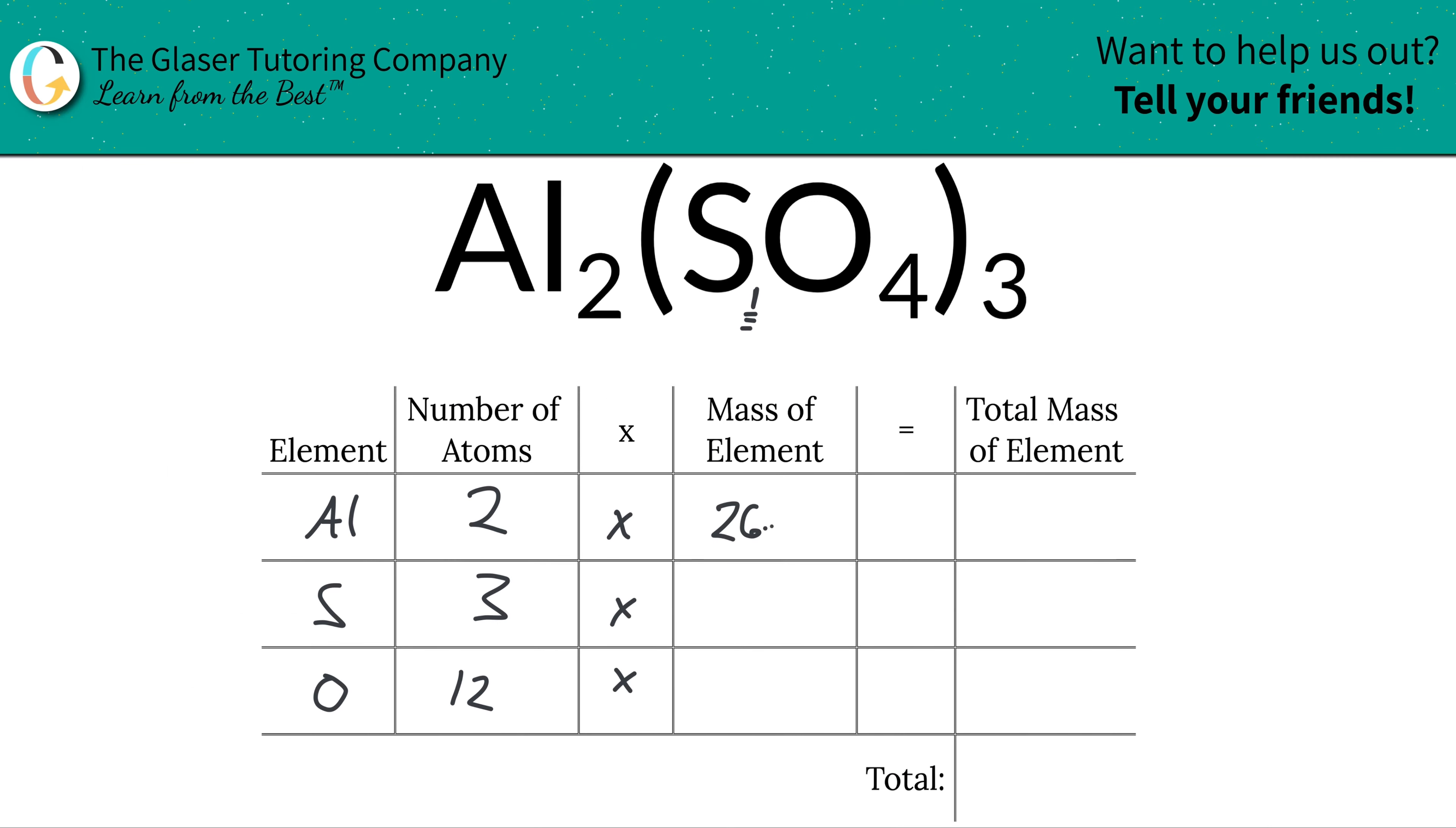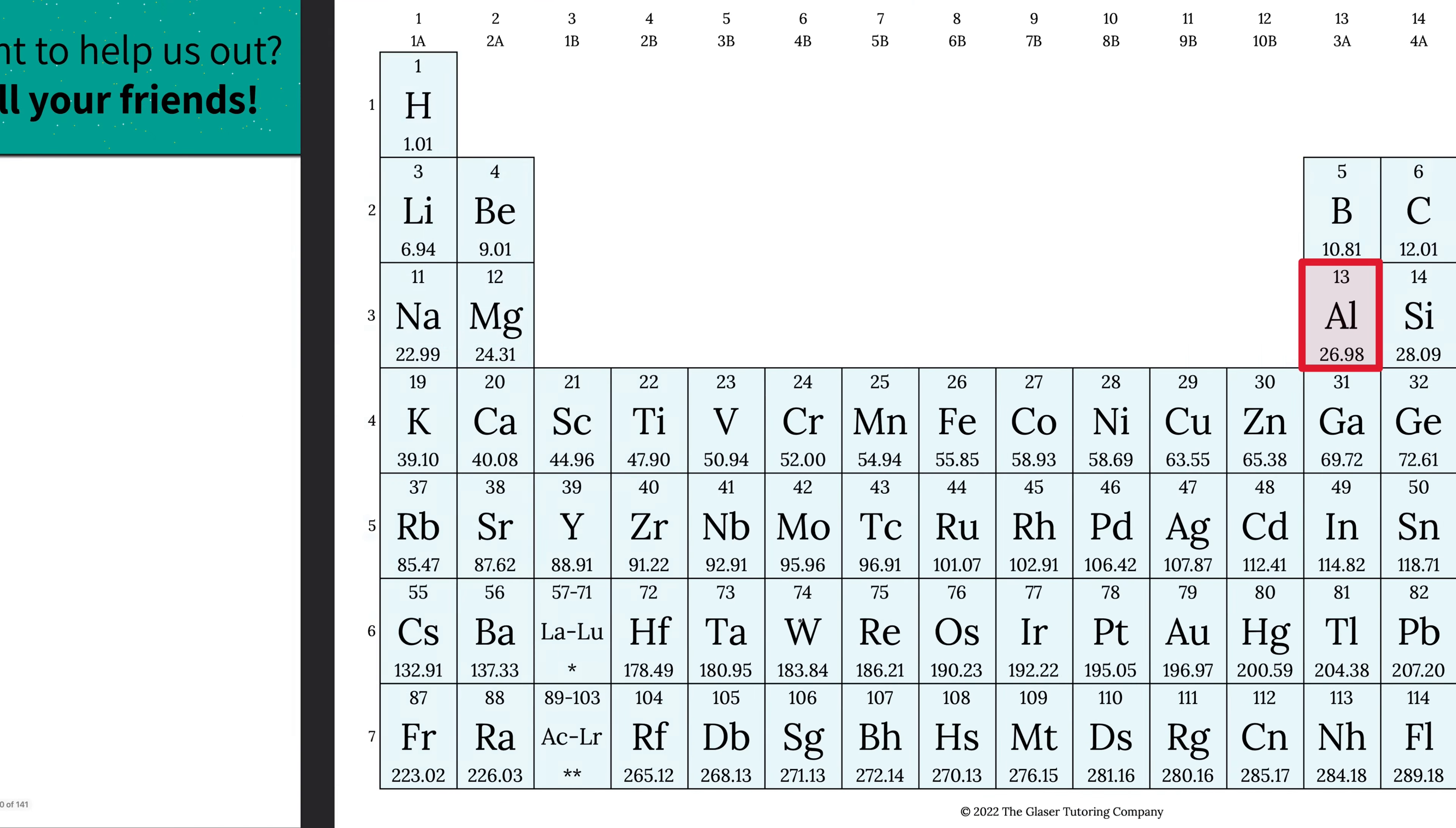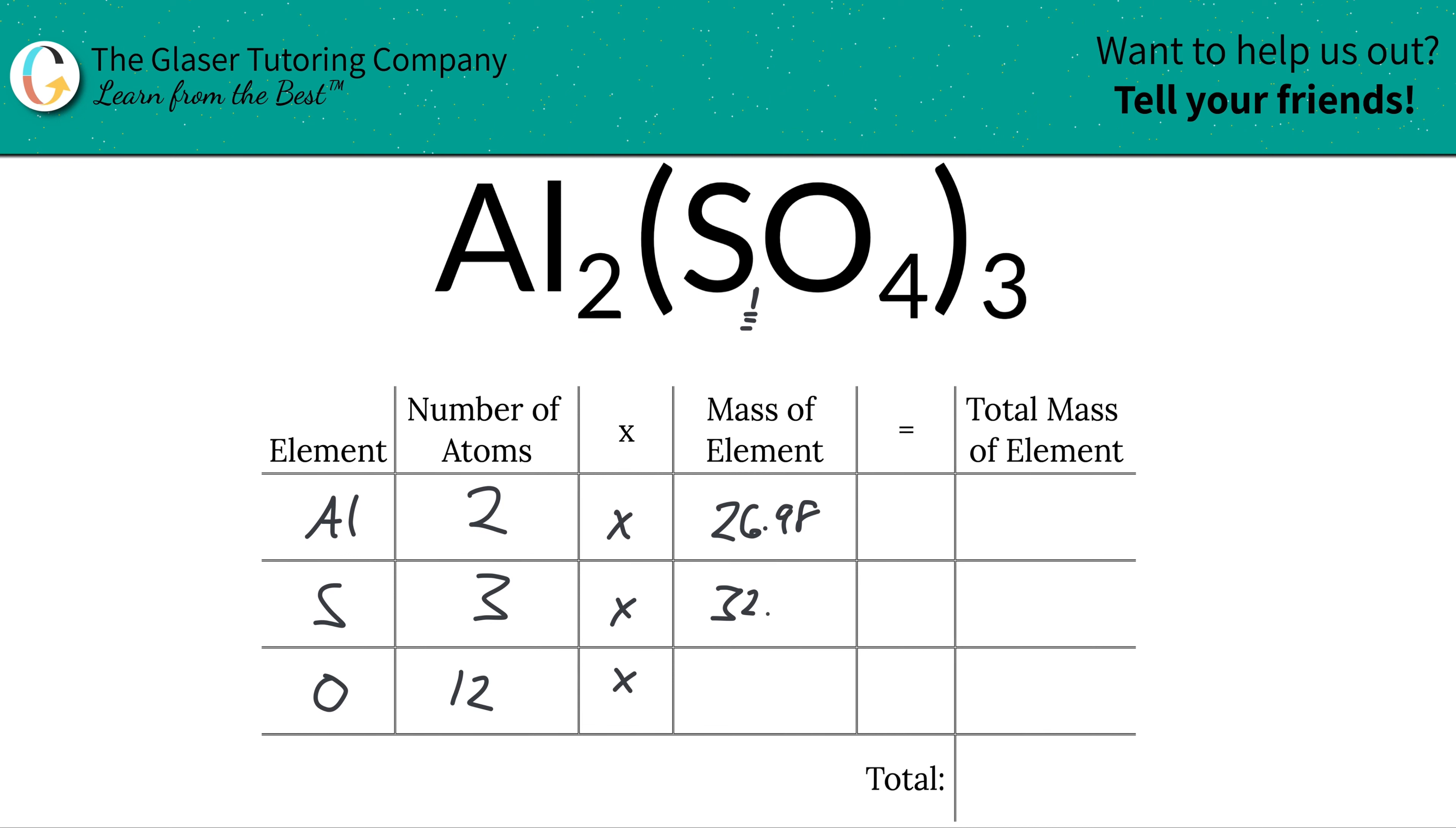So we got 26.98. This is about 32.07 I think it was. Let's just double check, cool. And the oxygen here is about 16. Now depending upon if you use this table or another table, the numbers might be ever so slightly different, but that's just because where we decide to round.